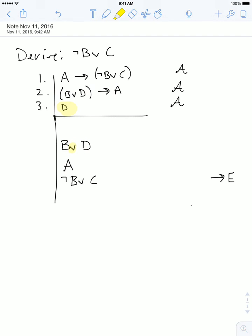Introduce this disjunction to create this sentence, and that completes the derivation. In fact, because we can write down line four is going to be B or D, and that's going to come from line three by disjunction introduction.